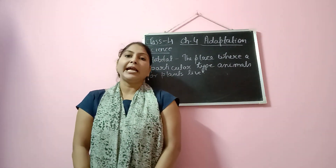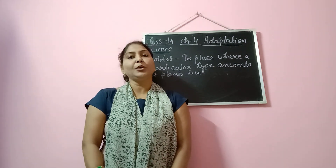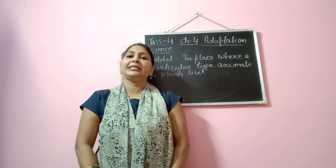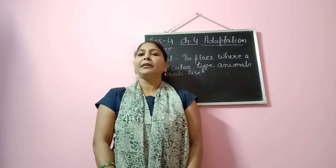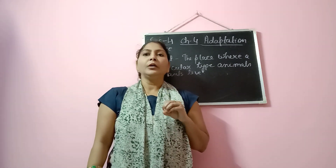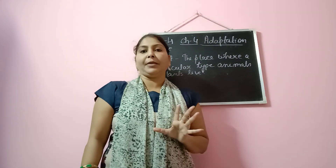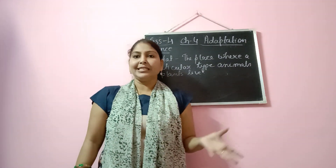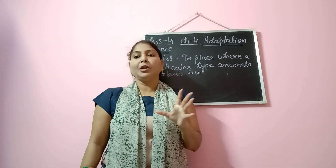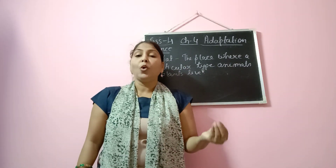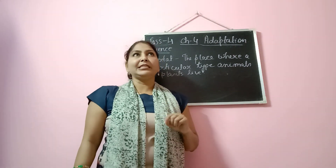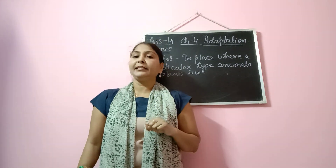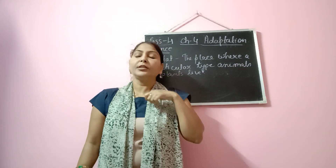Basically we are going to learn adaptation in animals. You must be knowing that on earth there are various types of animals and plants present or living. Now all these animals and plants are not living in the same kind of environment. Like for example if I talk about fishes — their habitat is to live in water. So they are called aquatic animals.